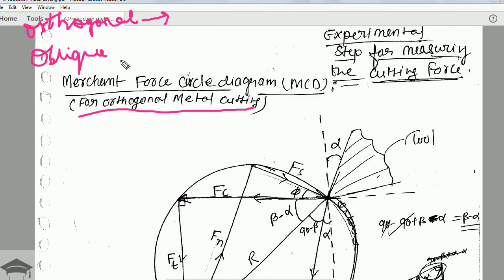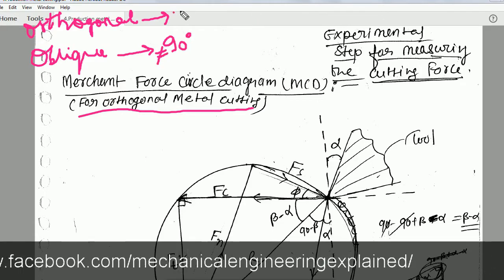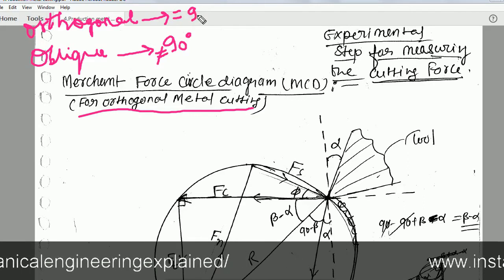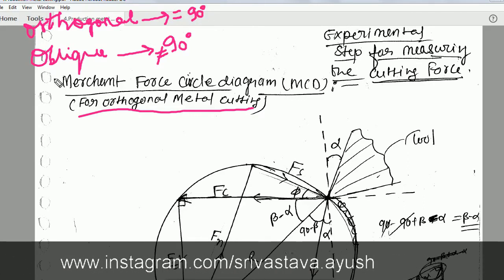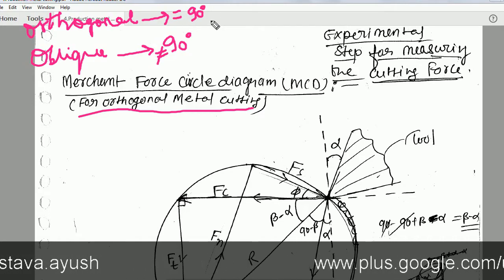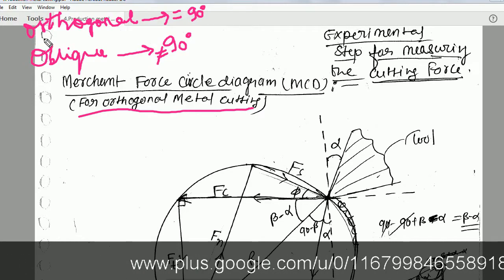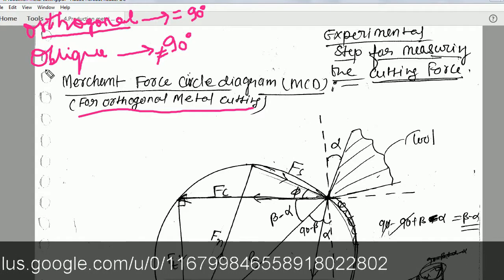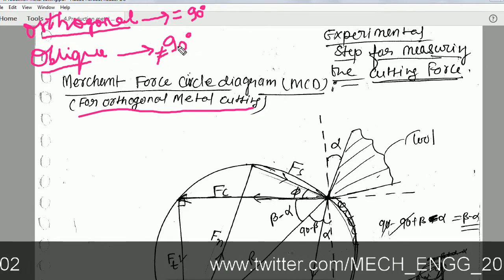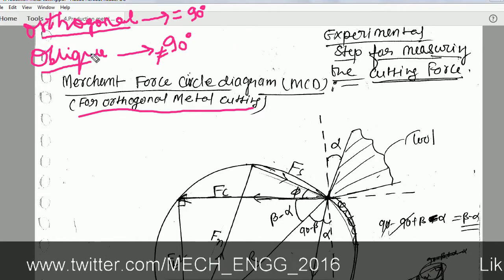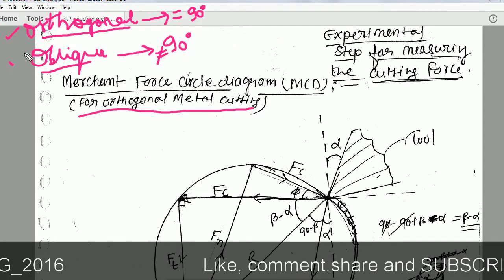In oblique cutting, the angle is other than 90 degrees. In orthogonal cutting the tool edge is perpendicular to the cutting velocity direction, while in oblique metal cutting it is not equal to 90 degrees — it may be less than or more than 90 degrees. Make sure you understand the difference between orthogonal and oblique cutting.